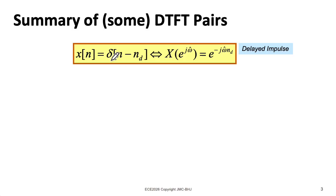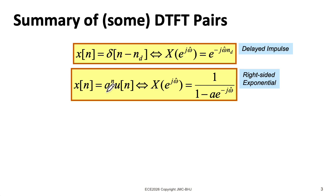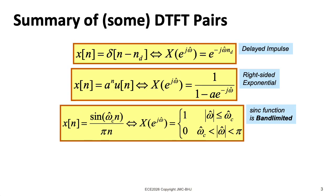So far, we've seen that an impulse in time corresponds to a complex sinusoid in frequency. As a special case, delta of n just transforms to a constant one. We also found the Fourier transform of a right-sided decaying exponential. Remember, for it to be decaying, the magnitude of A needs to be less than one.